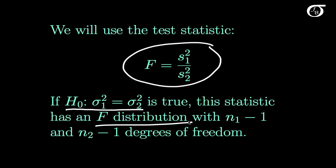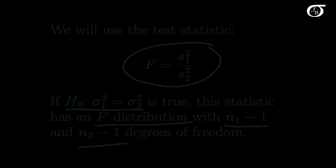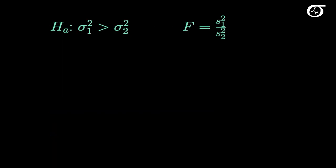That F distribution has degrees of freedom for the numerator and degrees of freedom for the denominator. We're going to have N1 minus 1 degrees of freedom in the numerator and N2 minus 1 degrees of freedom in the denominator. To carry out our test, we're going to need a p-value.